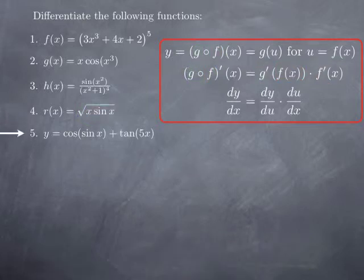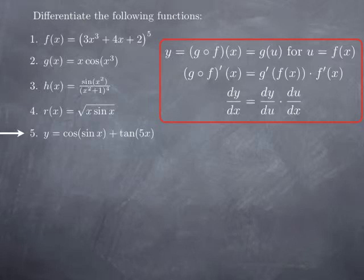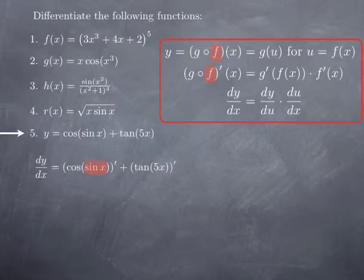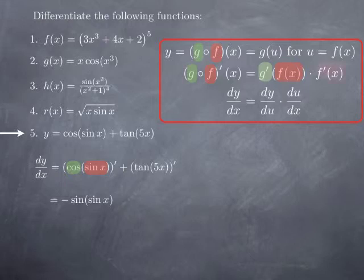Finally, we want to differentiate the function cosine of sine x plus tangent of 5x. We have a sum of two terms, and the derivative of the sum is the sum of the derivatives. Each one of these two terms is a composite. For the first one, we have the inside function sine x plugged inside the outside function cosine. Using the chain rule, we get the derivative of the outside function — derivative of cosine is negative sine — evaluated at the inside function, giving negative sine of sine x. Then we multiply by the derivative of the function inside, which is the derivative of sine x, so that's cosine x.